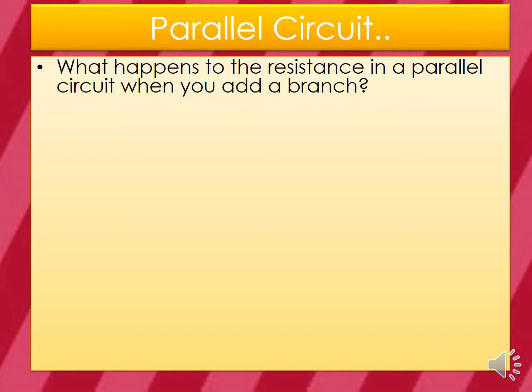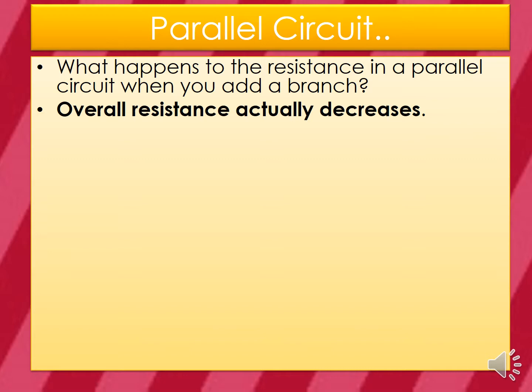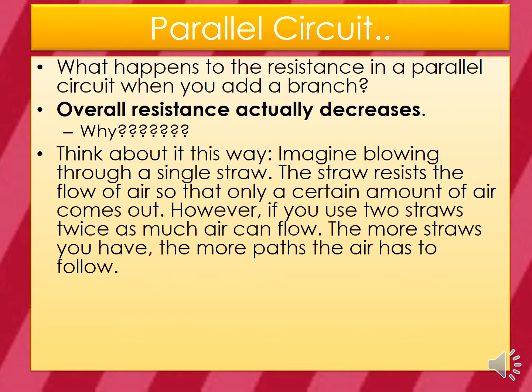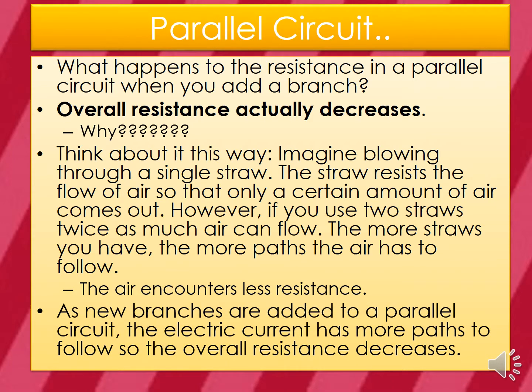What happens to the resistance in a parallel circuit when you add a branch? Overall resistance actually decreases — the opposite of adding a bulb to a series circuit. Think of it this way: imagine blowing through a single straw. The straw resists the flow of air so only a certain amount comes out. But if you use two straws, twice as much air can flow. The more straws you have, the more paths the air has, and it encounters less resistance. As new branches are added to a parallel circuit, the electric current has more paths to follow, so overall resistance decreases.